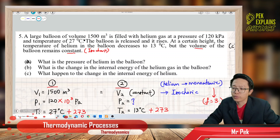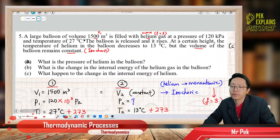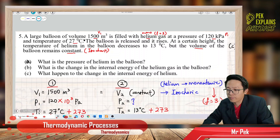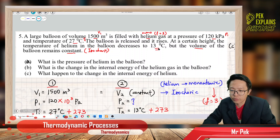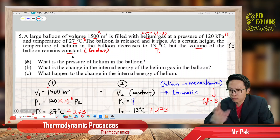We have the initial volume V1. This is helium gas — helium gas is a monoatomic gas, which means you have 3 degrees of freedom. You have the initial pressure in kilopascal — you need to change to Pascal. This is pressure one. You already have volume one and pressure one and also temperature one. Then the temperature decreases, so this is the final temperature T2. Volume is constant, meaning V1 equals V2. The only thing changing is the temperature, and consequently the pressure.